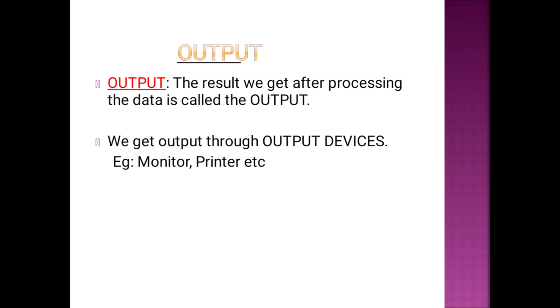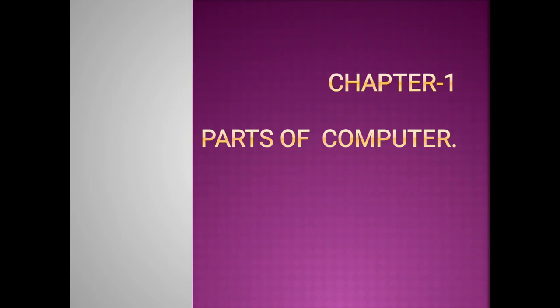In short, how a computer works: first we give input to the computer, then some process happens inside the CPU, and then we get the result — that is the output. Now we will start Chapter 1: Parts of Computer.